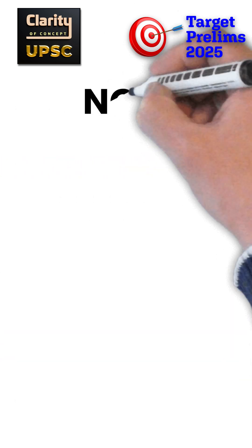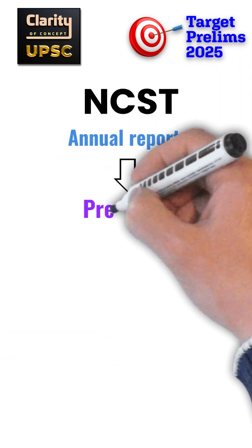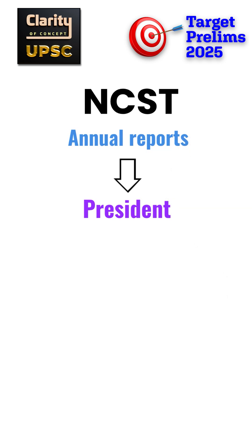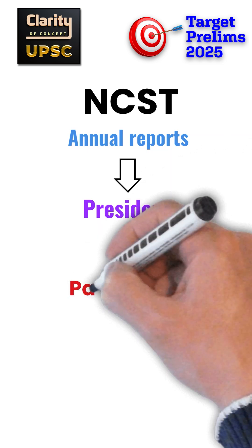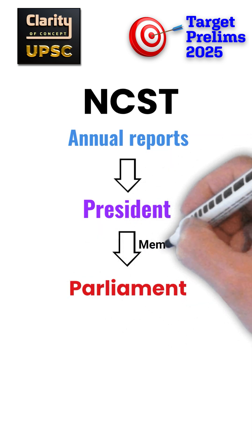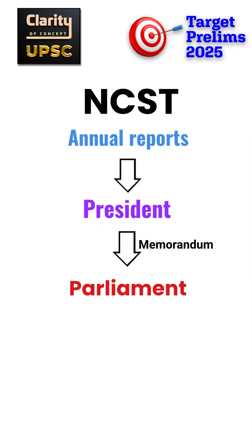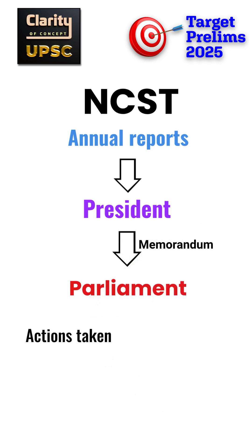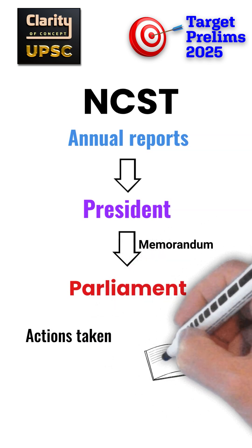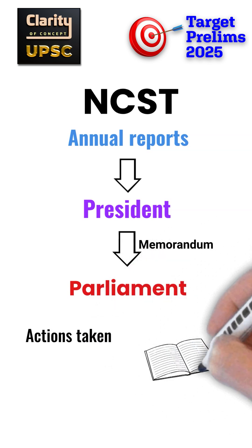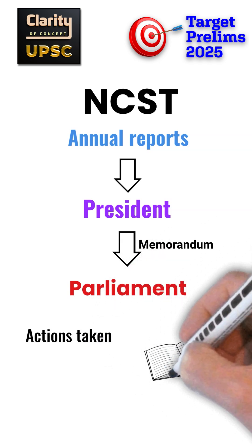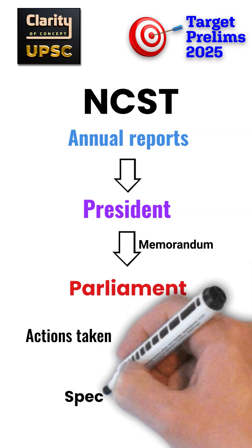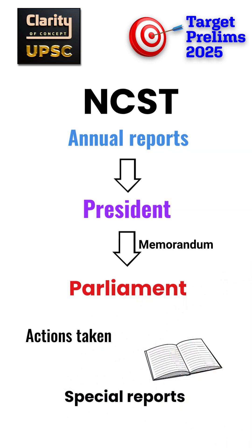The NCST submits annual reports to the President, which compile all the recommendations made during that year. The President then presents the report to Parliament along with a memorandum prepared by the government explaining the actions taken on the Commission's recommendations. This ensures accountability in implementing tribal welfare measures. The Commission can also submit special reports on urgent matters if needed.